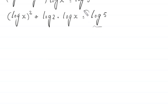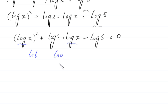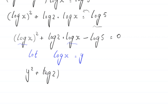Rearranging, we get log x squared plus log 2 times log x minus log 5 is equal to 0. Now suppose that log of x is equal to y. So this equation will become y squared plus log of 2 times y minus log of 5 is equal to 0.